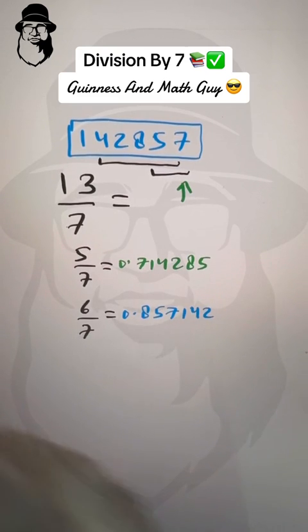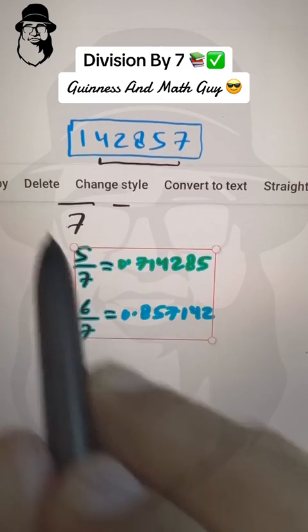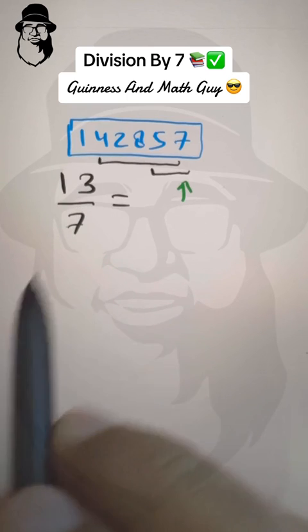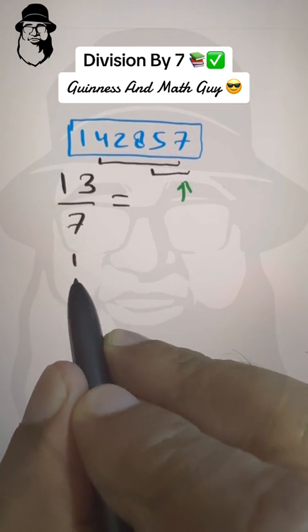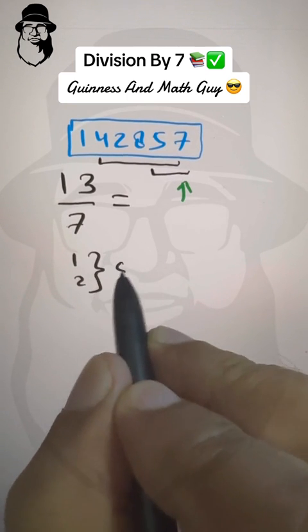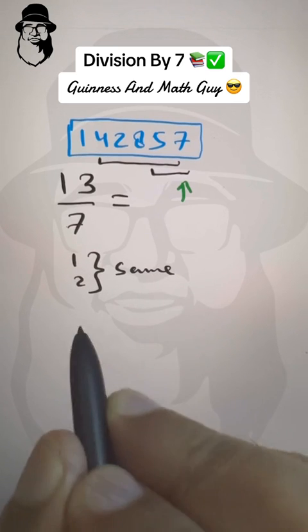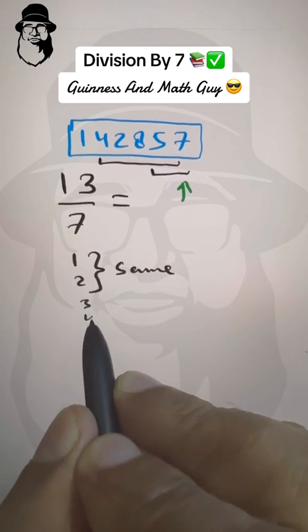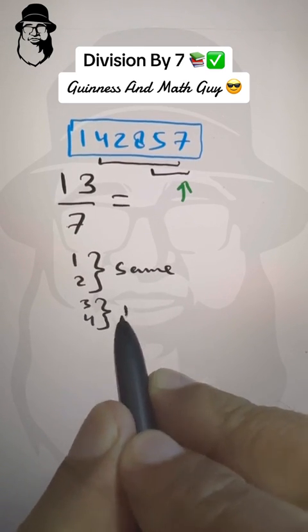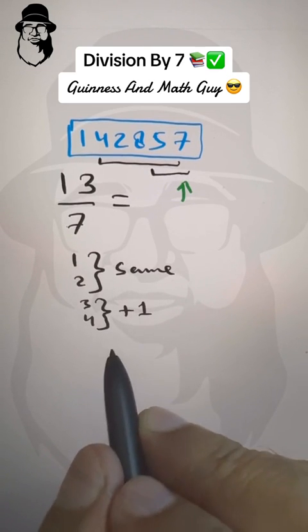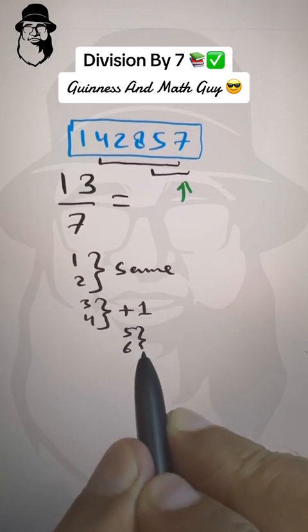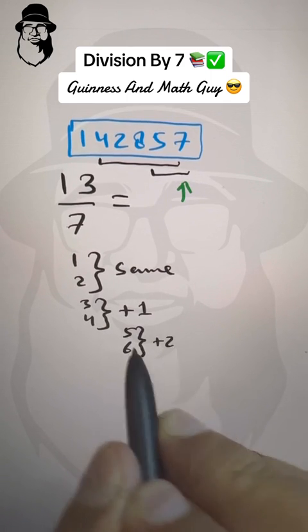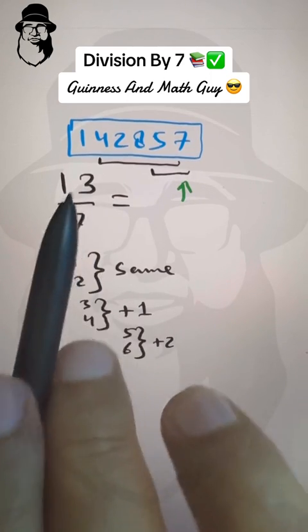Now, let me summarize all of this. And then we'll go back to the original question. For remainders 1 and 2, it's same. For 3 and 4, you increase 1. And for 5 and 6, you increase 2, and then start the same sequence from there.